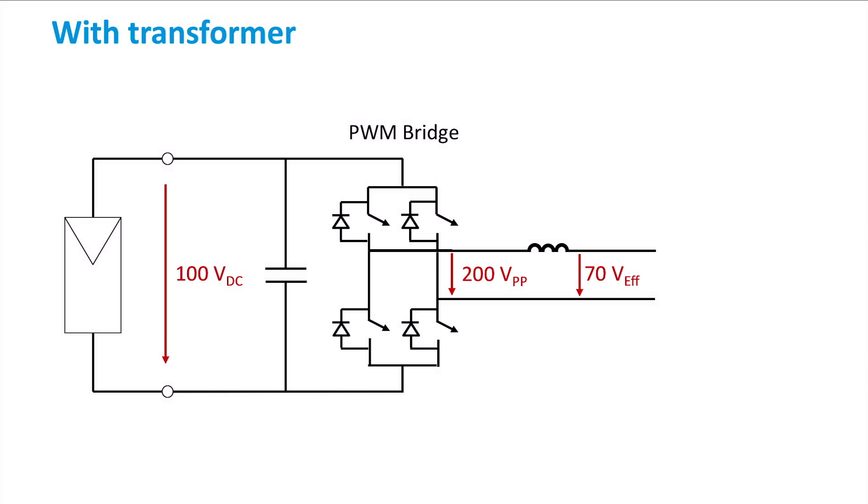Considering the fundamental harmonic of the output wave, we obtain an effective voltage of approximately 70 volts. This is not enough to be fed into the mains or grid. Therefore, a transformer is needed to step up the voltage level into the desired 230 volts.